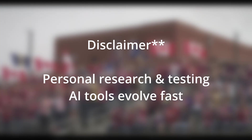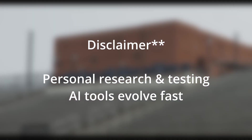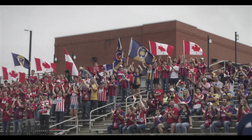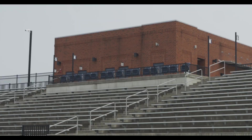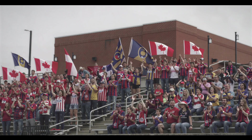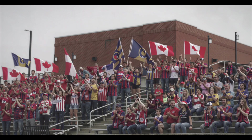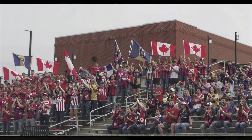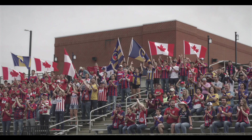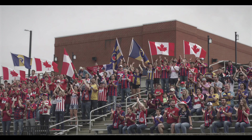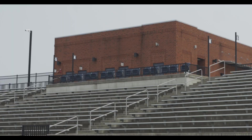Quick disclaimer — this workflow is based on my own testing and research. AI tools move fast, models change often, and settings that work today may need adjusting tomorrow. This isn't a magic button, it's a controlled workflow. As we know, crowd shots are expensive: extras, logistics, continuity, motion repetition — all of it adds up. Traditional crowd tools work great but they are heavy, time-consuming, expensive, and often overkill for background and mid-ground shots. The challenge was simple: how do you go from empty bleachers to a believable animated crowd without breaking the comp and without any flickering?